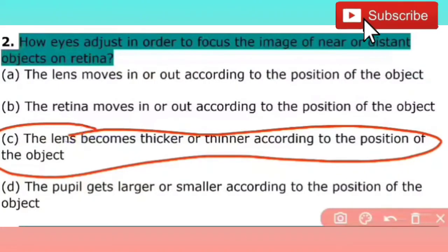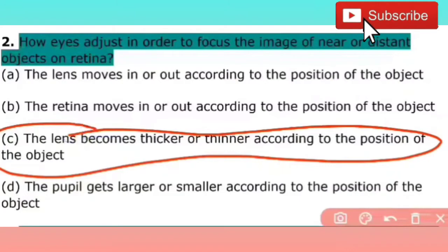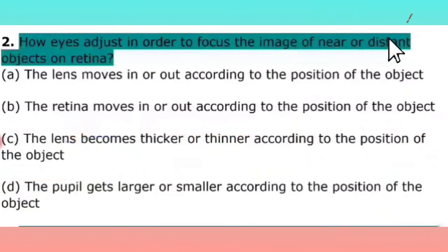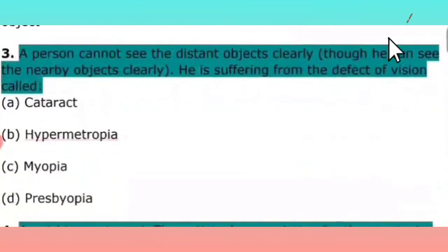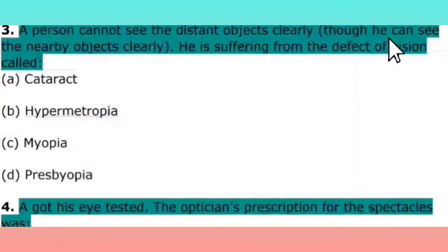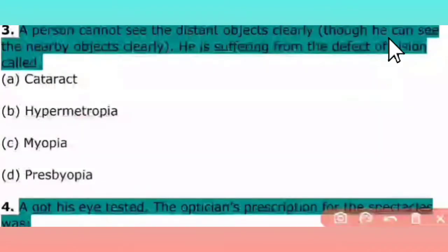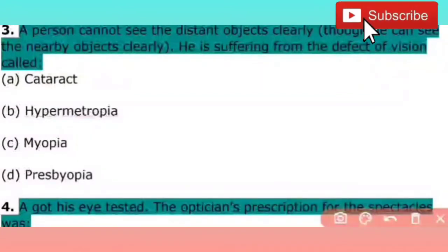Where your object is placed — whether it is near or far — looking at that, the position of your lens is set accordingly. So the right answer is C. The next question is: a person cannot see distant objects clearly, though he can see nearby objects clearly. He is suffering from the defect of vision called myopia. So the right answer is myopia.